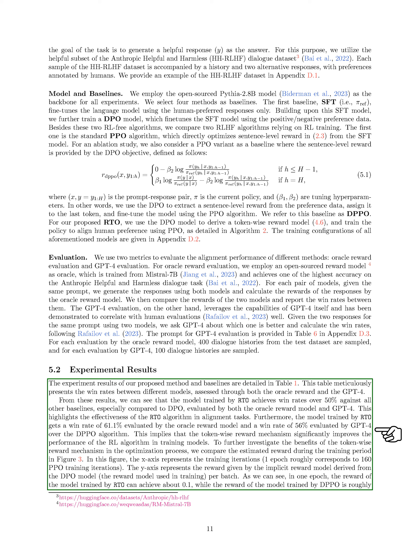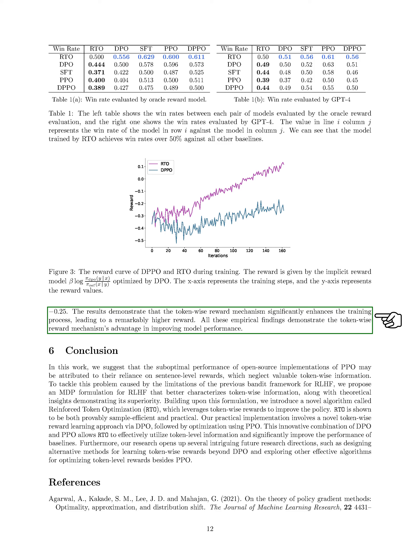The experimental results showed that our RTO method outperformed all baselines, especially the DPO model, in terms of win rates based on both Oracle reward and GPT-4 evaluations. The RTO-trained model achieved a win rate of over 50% against other methods and notably outperformed the DPPO algorithm with win rates of 61.1% and 56% in Oracle reward and GPT-4 evaluations respectively. This indicates that the token-wise reward mechanism in RTO significantly enhances the RL algorithm's performance during training, with the RTO-trained model consistently achieving higher rewards compared to the DPPO-trained model.